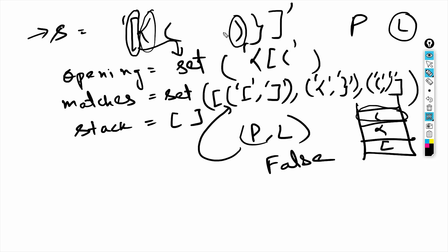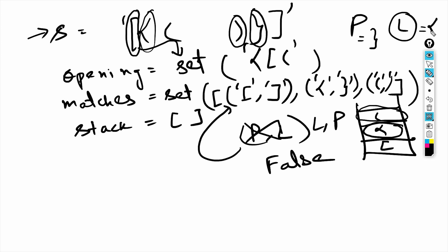If the pair is not in matches, we return false right there, because just one wrong pair is enough to declare the string unbalanced. For example, when p is a right curly bracket and l is a left round bracket, we check if (l, p) is present in matches — and if it is, we won't return false.